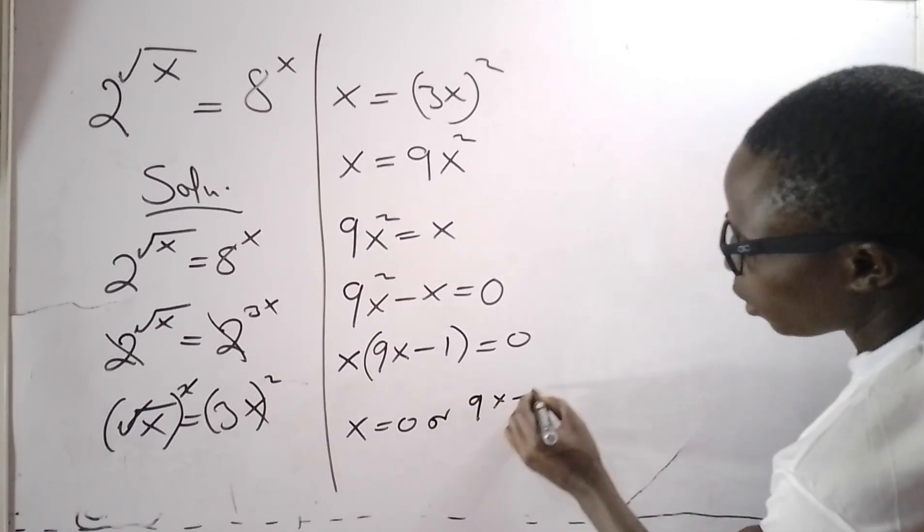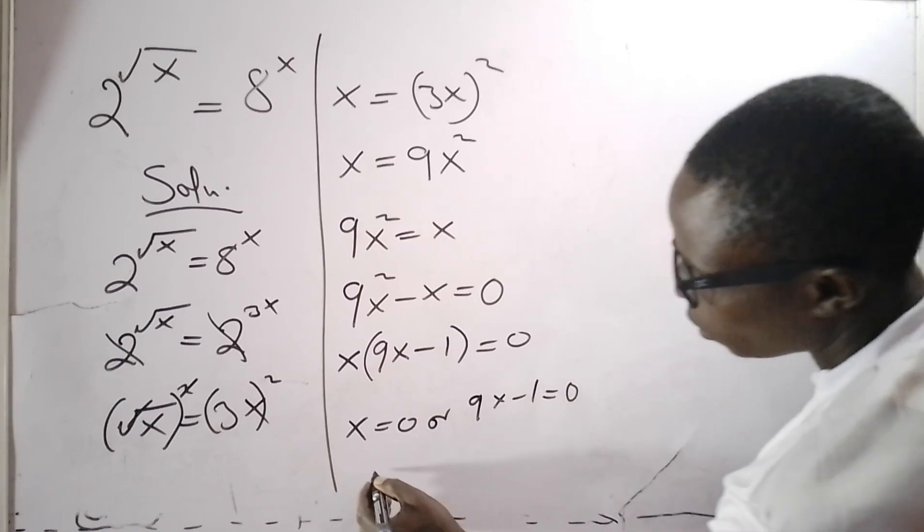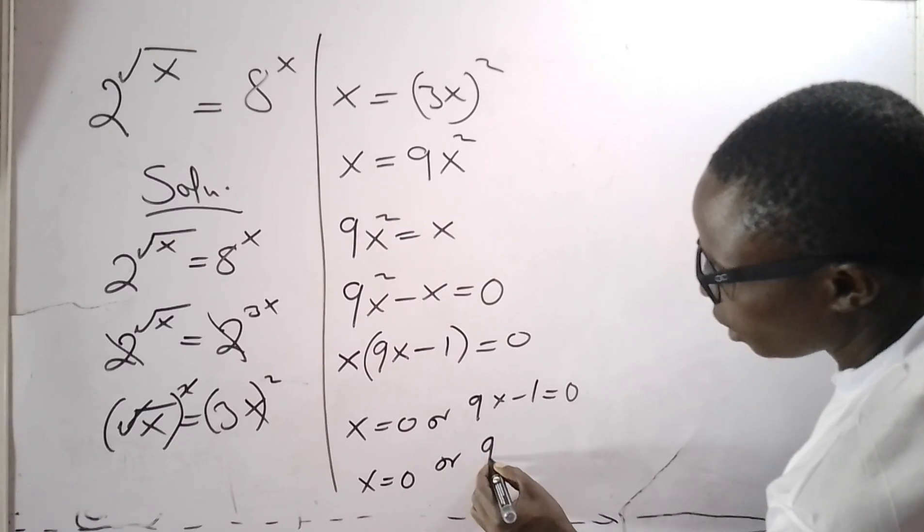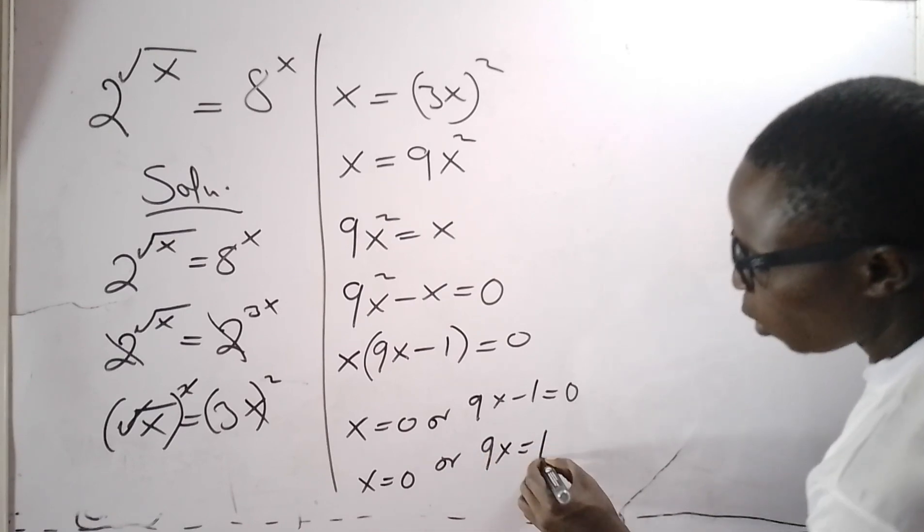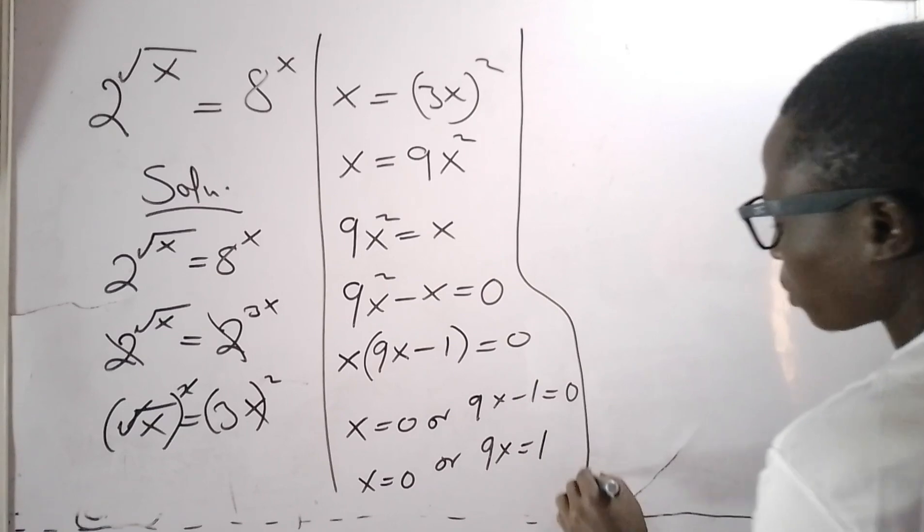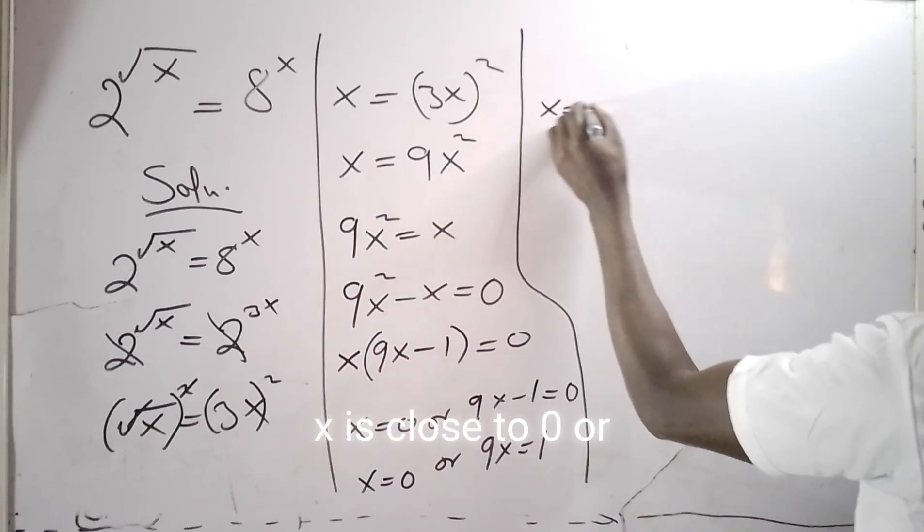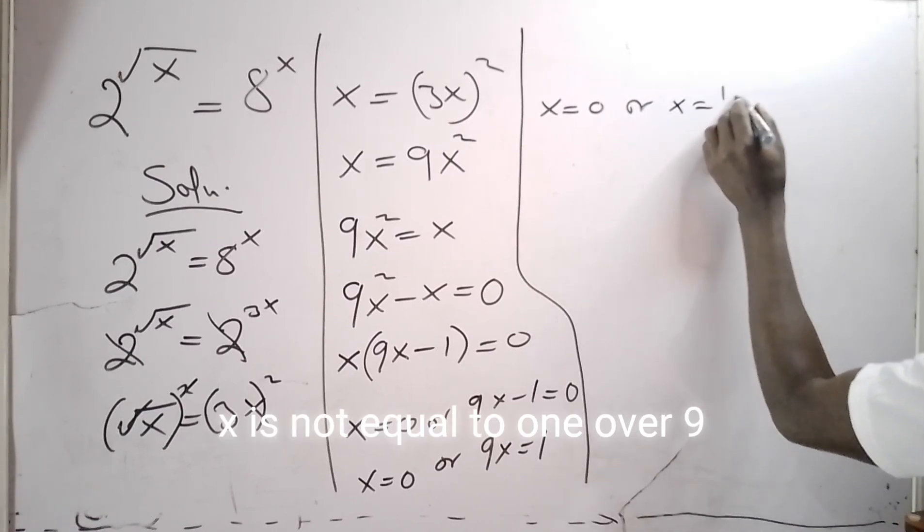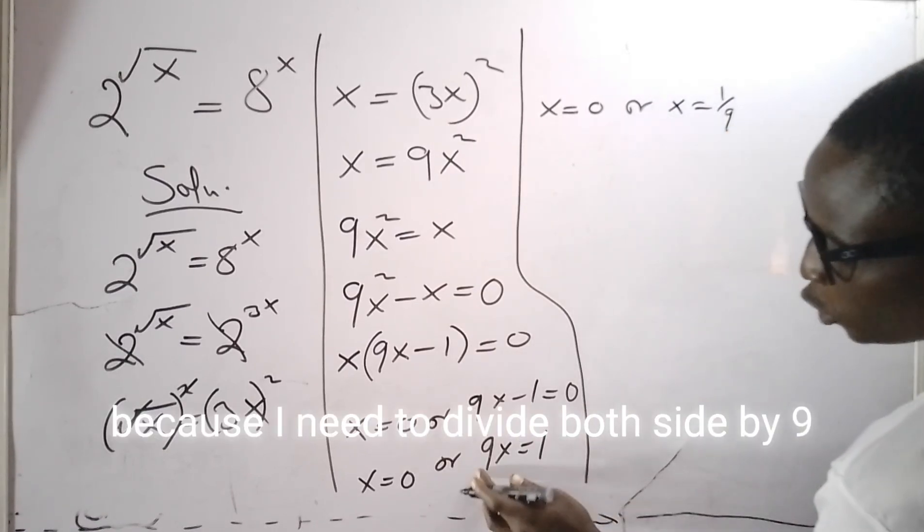And 9x is equals to one, so x is equals to one over nine because I need to divide both sides by nine.